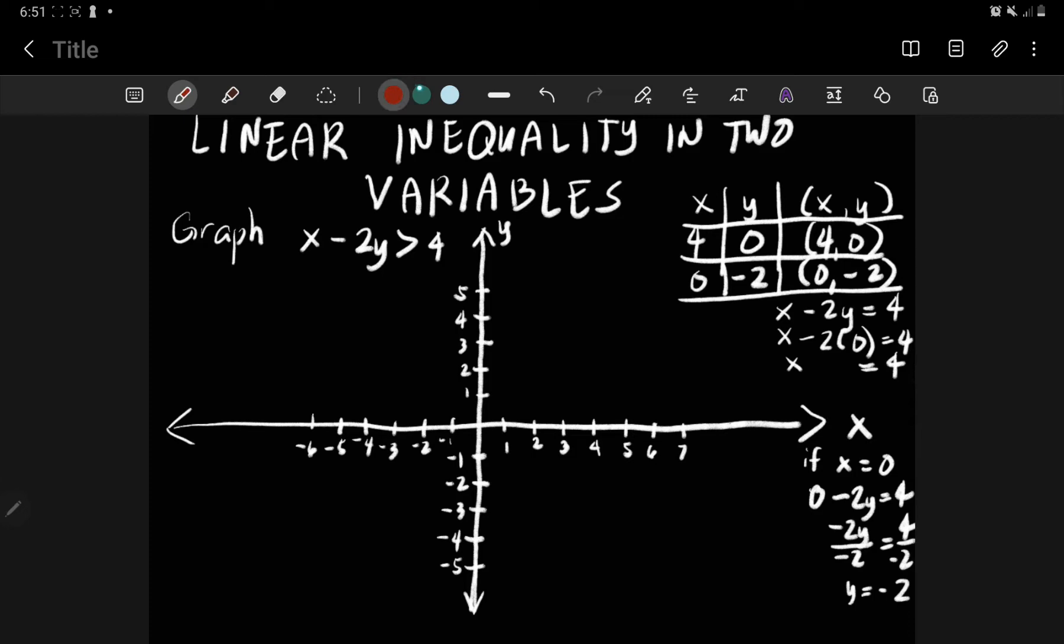And then you plot the points. So 4, 0 along the x-axis, specifically the positive x-axis. And then 0, negative 2, that is along y-axis, specifically negative y-axis.